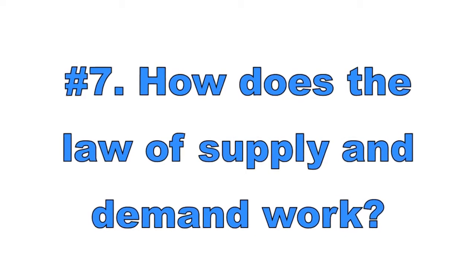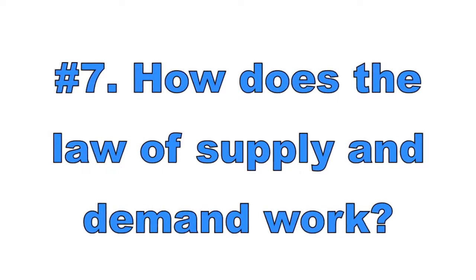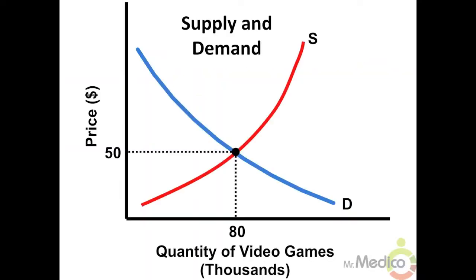Number seven: How does the law of supply and demand work? In a market, buyers and sellers come together to establish equilibrium prices and quantities of goods and services. The law of supply consists of a direct relationship between price and quantity, and the law of demand consists of an inverse relationship between price and quantity. When the supply and demand curves intersect, a market equilibrium is established. Assuming no externalities exist, the intersection of supply and demand is allocatively efficient.